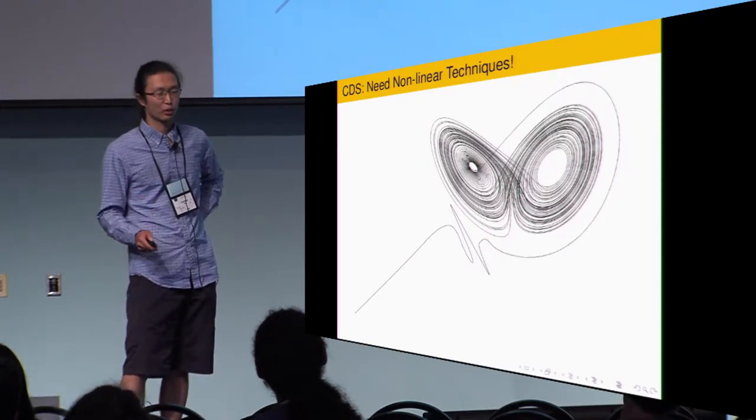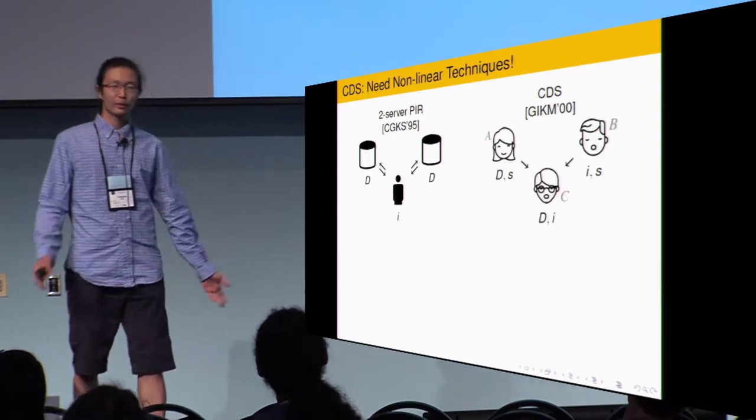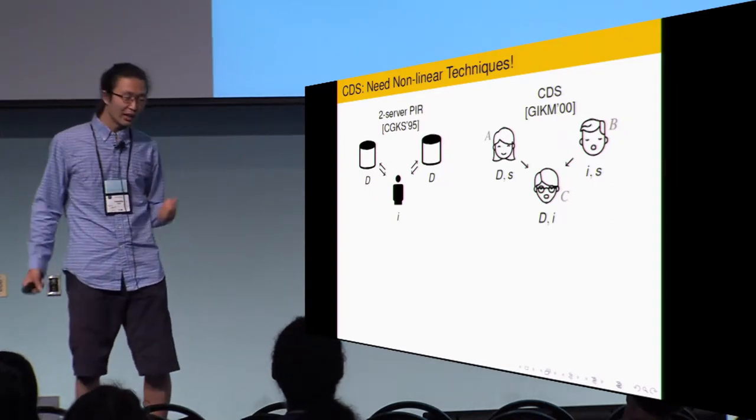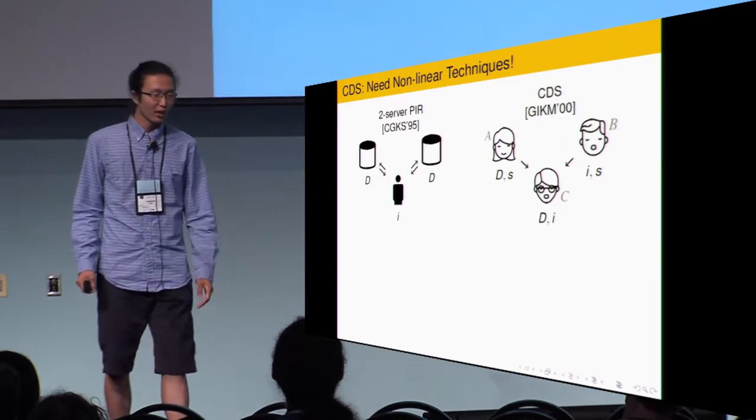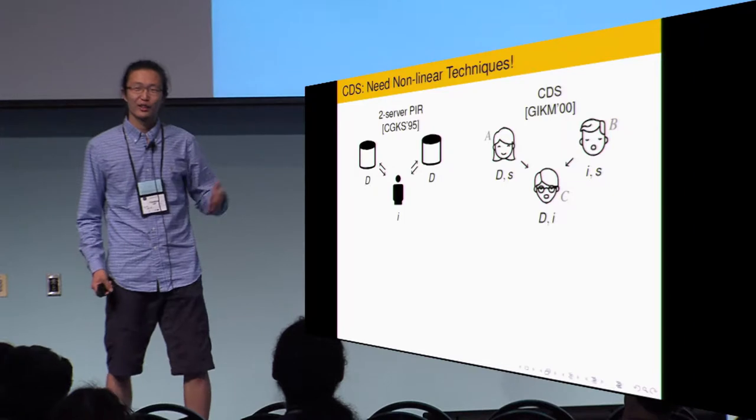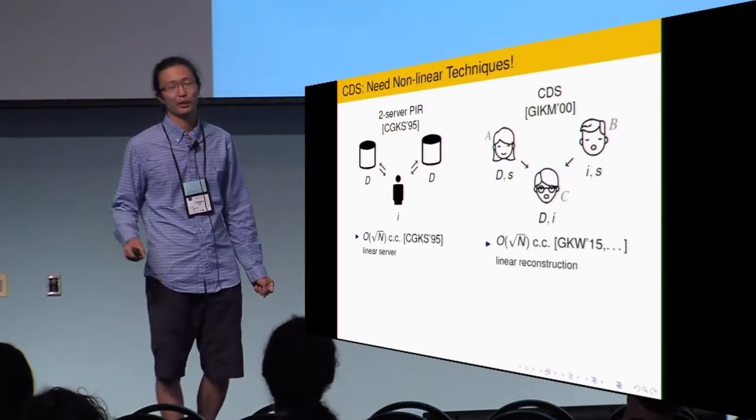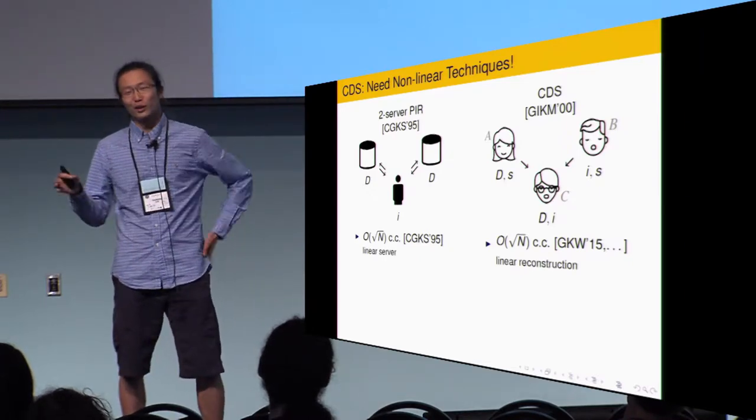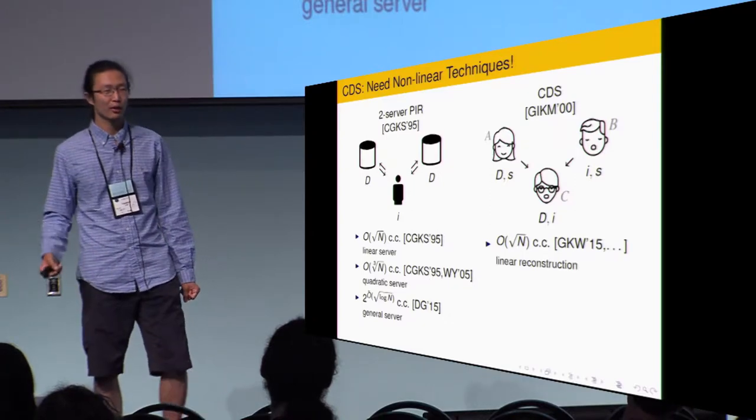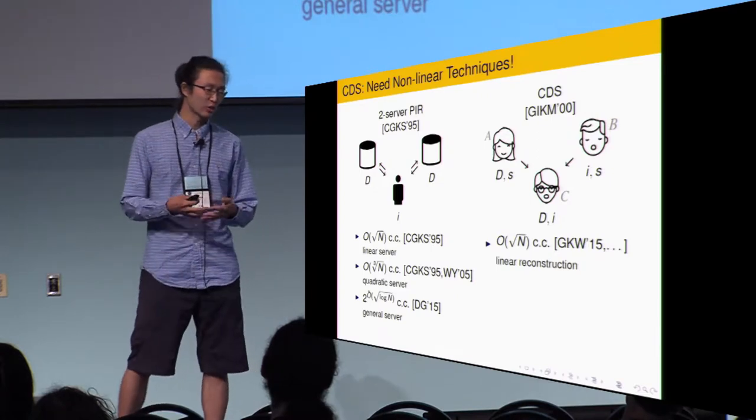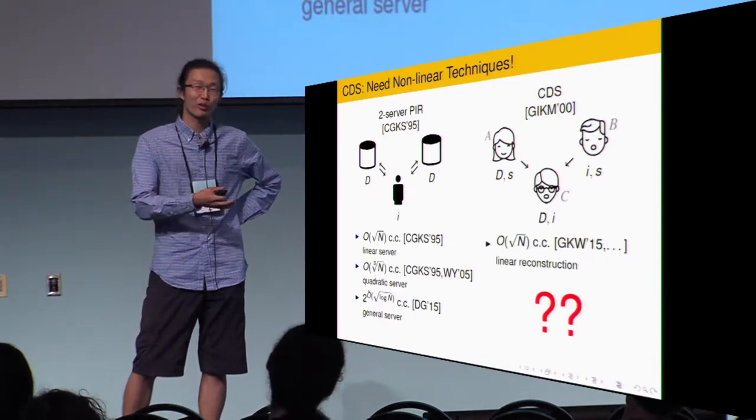It turns out like the correct place to looking for nonlinear technique is from two-server information theoretical private information retrieval. So, in two-server PIR, there are two servers. Each hold a table. And the client hold the index. The client want to learn the S index in the table without leaking his index. You can see it's somehow similar to CDS. There are three parties. There are information theoretical security. There is a database. There is an index. And also, there is a square root n communication construction.